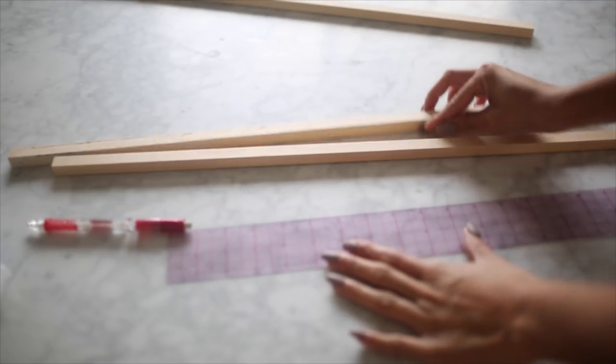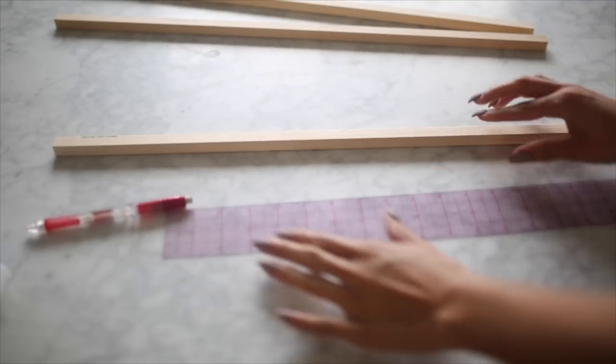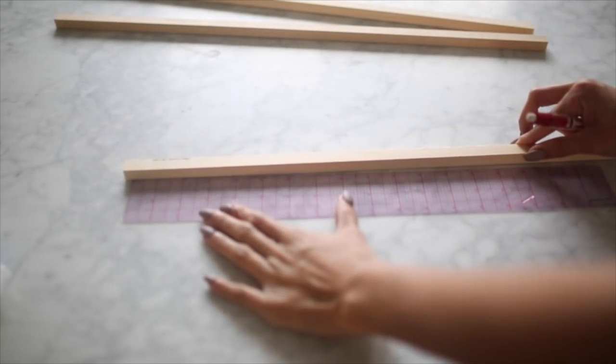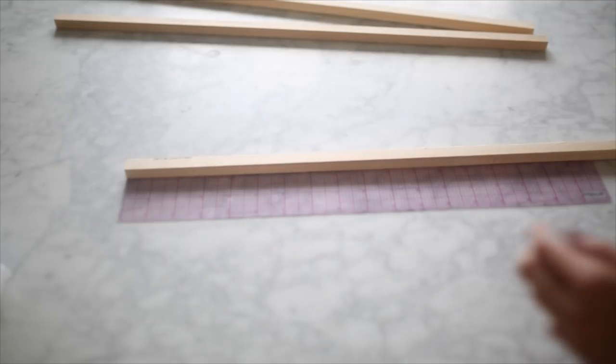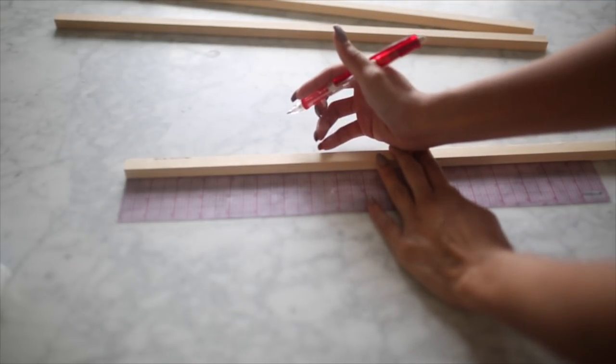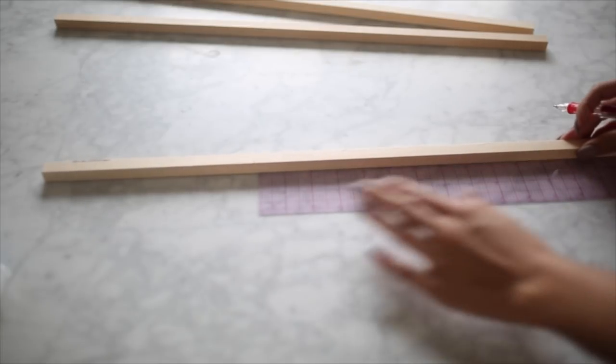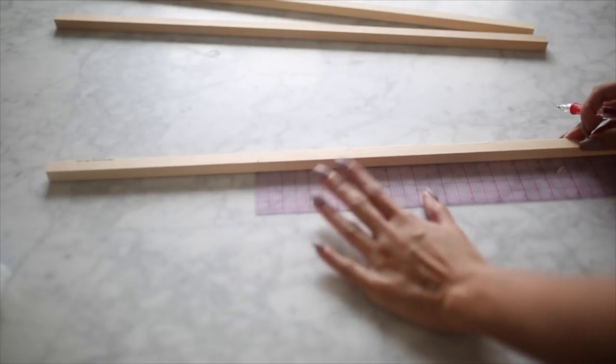Begin by taking one of the pieces of wood and basically to make this simple, measure out the entire length of this piece of wood that you're using and then divide it by three and mark that off. You want to end up with three pieces of one of the wood strips. So depending on how long yours is, measure the total length and divide it by three.